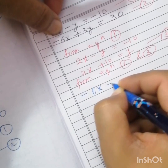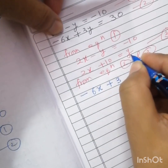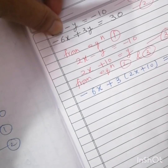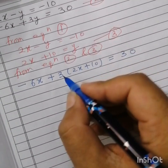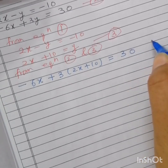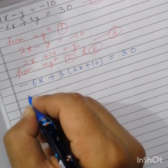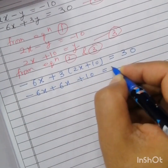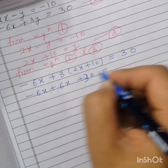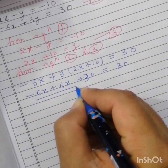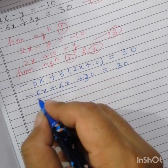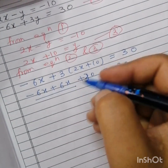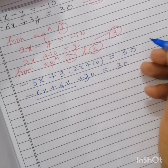From equations two and three: minus 6x plus 3 times (2x plus 10) equals 30. On solving: minus 6x plus 6x plus 30 equals 30. The x terms cancel out, so this equation does not have any solution for x.